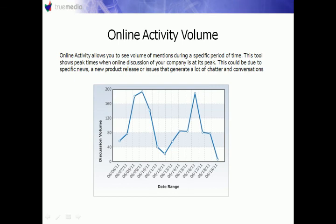The first graph is the online volume indicator. It shows you when mentions of your brand or keywords are high or low. As you can see with this example there are a few peaks and valleys. The peaks may represent a specific issue happening at that time that people are talking about, an event that's taking place, or a press or product release.